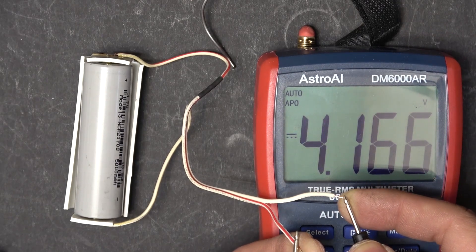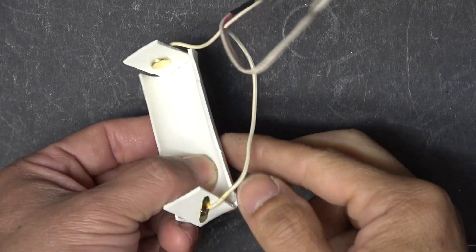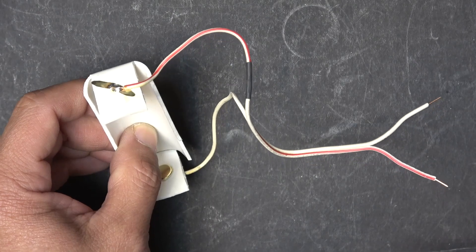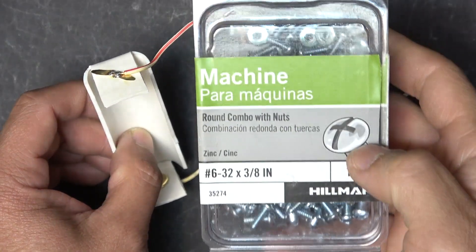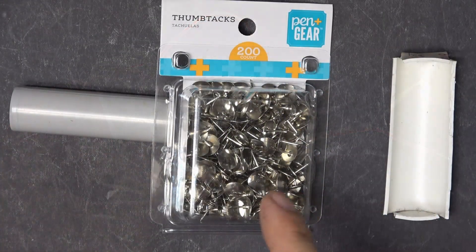4.1 volts, it's working, that's great. This method is easy but you need to solder the wires to the terminal. Compared to the previous method that I used with the machine screws, I don't need to solder.